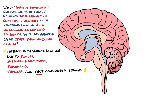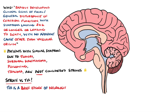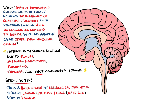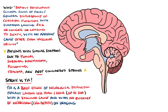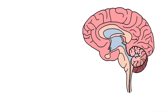The difference between a stroke and a TIA, or transient ischemic attack, is that a TIA is a brief episode of neurological dysfunction, typically less than one hour but up to 24 hours, with a vascular cause and with no evidence of infarction — meaning cell death — on imaging. They were previously distinguished by the duration of neurological symptoms, but now are distinguished based on the absence of infarct evidence on imaging and resolution of symptoms.